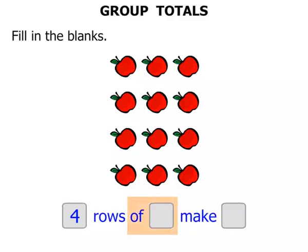We've got four rows of how many? Now what that means is how many in each of the rows. Let's look at the top row. We can see there are three apples there. So we write the three there. So at the moment we've got four rows of three make how many?